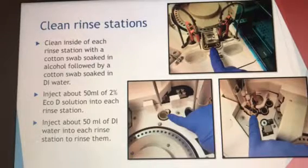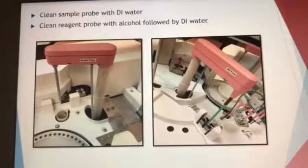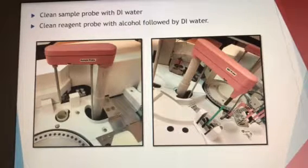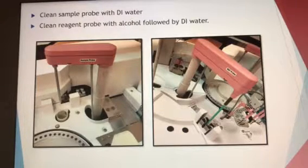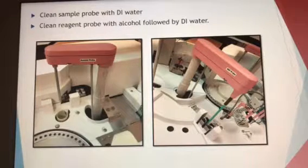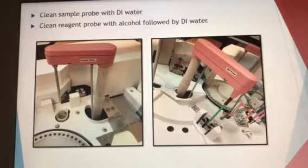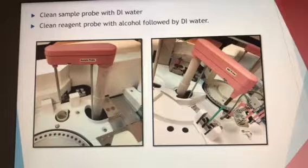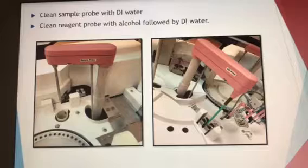Next, clean the sample probe with DI water only — that is the only probe on the 601 side that we do not clean with alcohol. The sample probe is in the first picture. The reagent probe, shown in the second picture with the green on it, is cleaned with alcohol first, then followed by DI water.